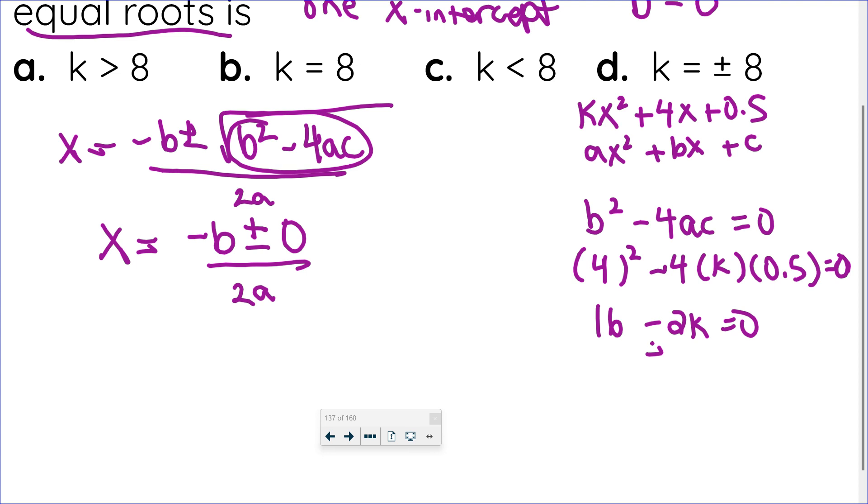So I can add 2k to both sides. And I get that 16 is equal to 2k. Divide both sides by 2. And k is 8. So now I know the value of k. It is equal to 8. d is my answer.